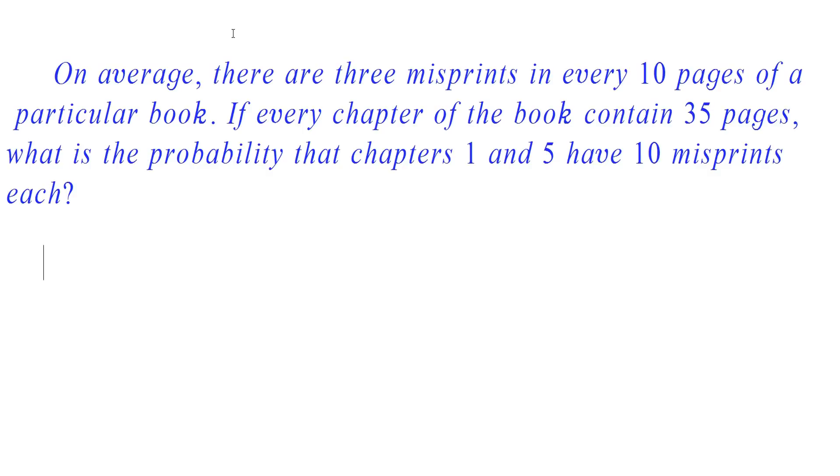Here given that average number of misprints in every 10 pages of a book is 3. Therefore, P is equal to 0.3. The number of pages in each chapter contains 35 pages. Therefore, N is equal to 35.